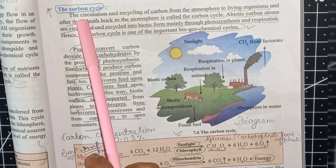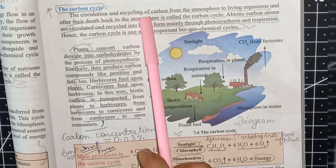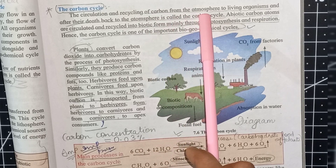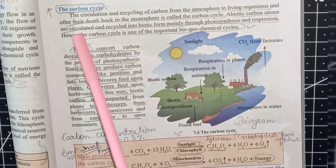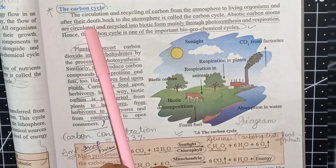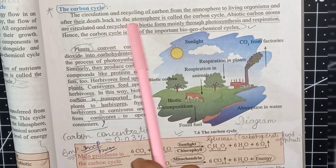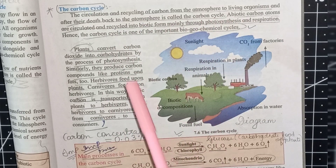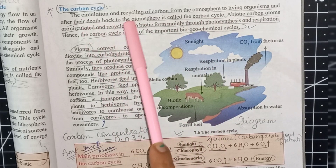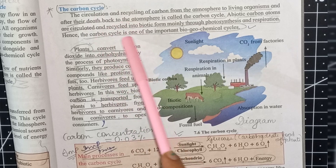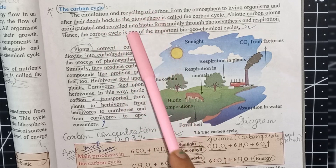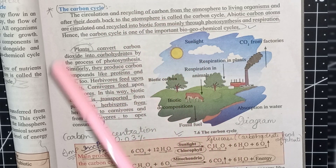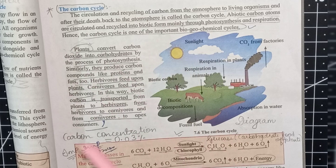The circulation and recycling of carbon from the atmosphere to living organisms, and after their death back to the atmosphere, is called the carbon cycle. Carbon cycle means circulation and recycling of carbon.